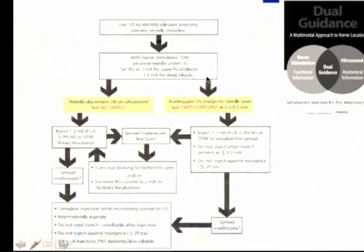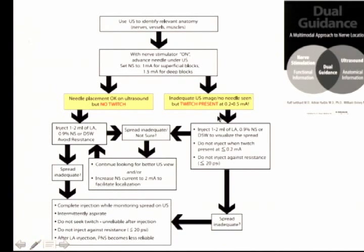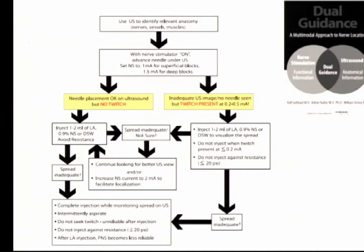The pathway here is to use ultrasound to identify relevant anatomy and place a needle at a close endpoint. Then set up the nerve simulator to 1 milliamp for superficial blocks, or 1.5 milliamp for deep blocks. Depending on whether we have a twitch response or not, we process accordingly. If ultrasound imaging is inadequate but a twitch is present, you proceed with injection — but do not inject when the twitch is below 0.2 milliamp, and do not apply medication with high pressure.